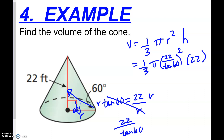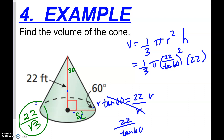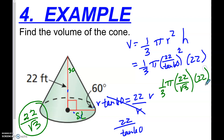Alternatively, treating this as a 30-60-90 triangle: the 60° angle means the long leg is 22, and the short leg (radius) is found by dividing by √3. Whether you use 22 / tan(60°) or 22 / √3, you get the same decimal. Plugging one-third · π · (22/√3)² · 22 into the calculator gives 3716.85 cubic feet.